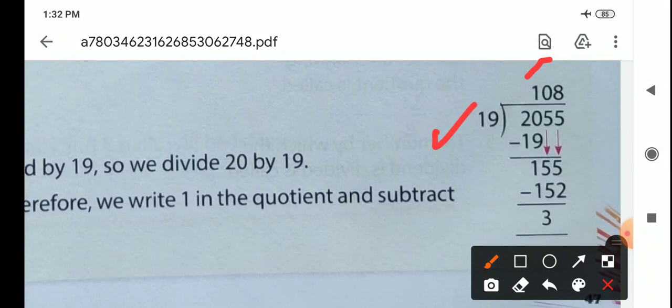So what we do? We do, here we put 0. Then bring down 5. So 155. 19 times 8 is 152. 155 minus 152 is 3.